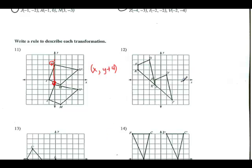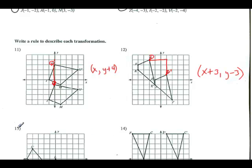For number 12, here's D and here's D prime. I'm moving to the right and then down. Moving right means adding; I go 1, 2, 3 — so X plus 3. Moving down means subtracting — I subtract 3 — so Y minus 3. You can finish problems 13 and 14 on your own. If you're stuck, go back and re-watch the video. Good job.